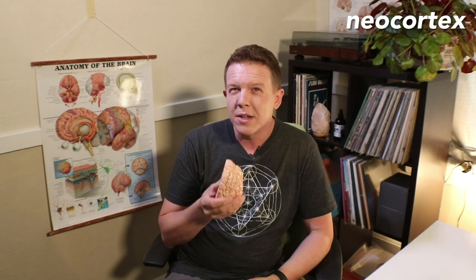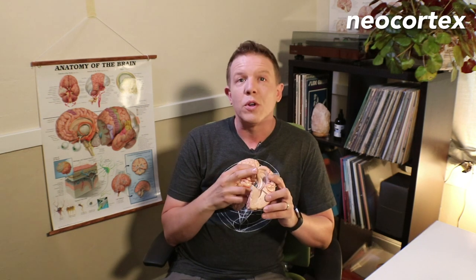Now in the neocortex, we think grid cells also exist, and they help create detailed mental maps of every object that you've ever learned. And it works by expanding the tricks that already exist in the entorhinal cortex.